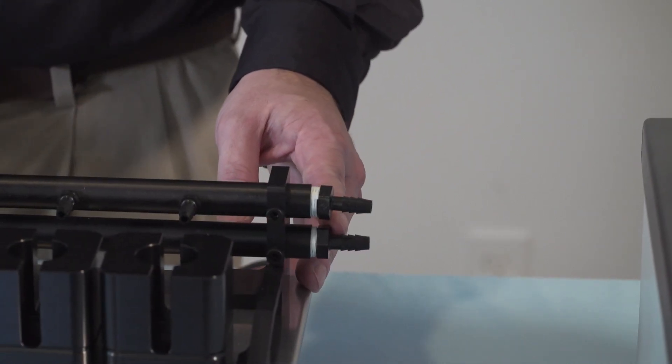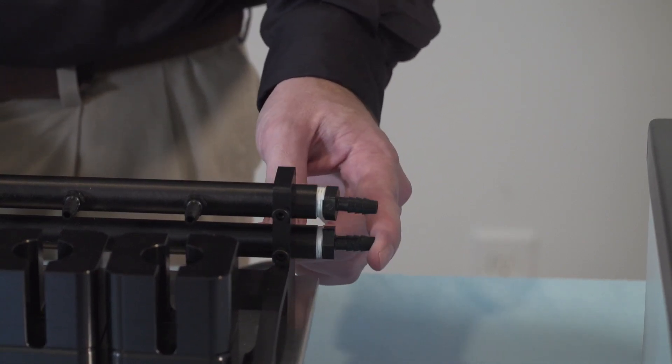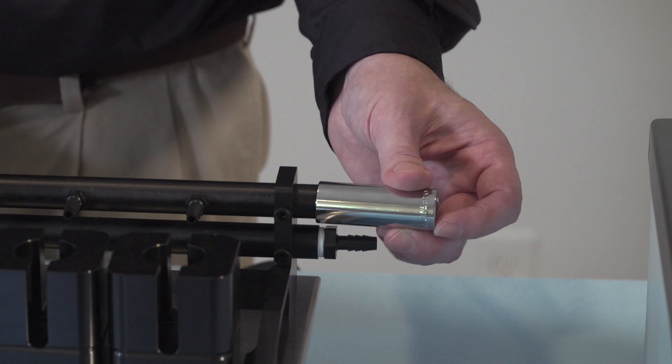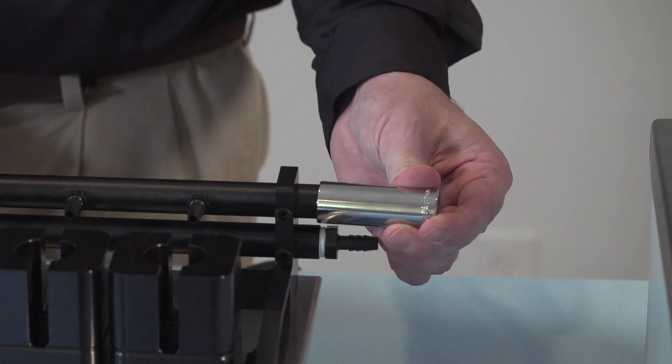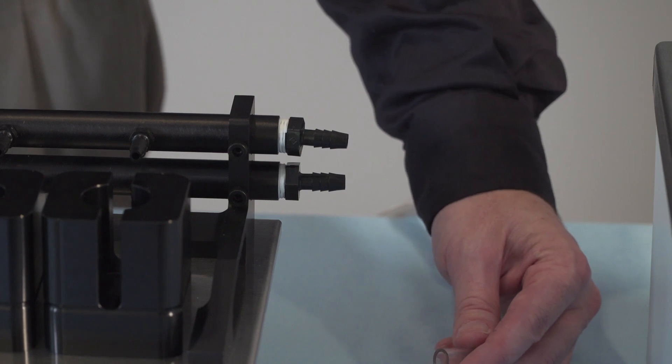Start the fittings without tools as they are plastic and can easily be damaged if they are misaligned. Once they are started, use a socket to tighten the fittings to the proper tightness. Once the fittings are tight, connect the tubing to the circulating water bath.